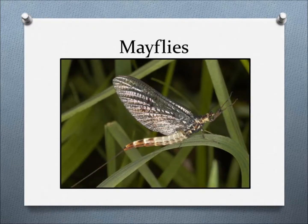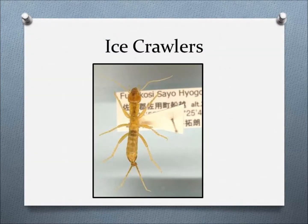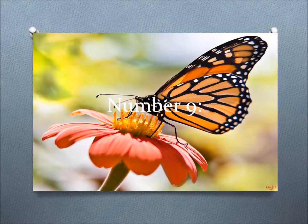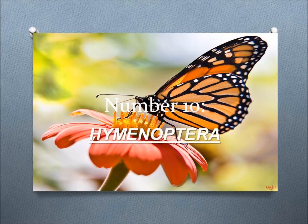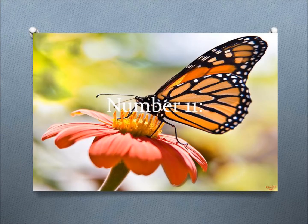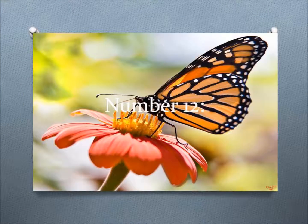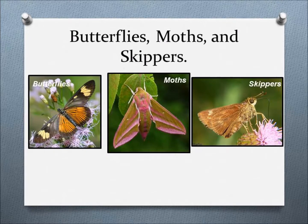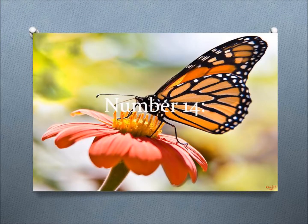Number 7: Ephemeroptera — example: Mayflies. Number 8: Grylloblattidae — example: Ice Crawlers. Number 9: Hemiptera — example: True Bugs. Number 10: Hymenoptera — example: Ants, Bees, Wasps, Bumblebees, and Sawflies. Number 11: Isoptera — example: Termites. Number 12: Lepidoptera — example: Butterflies, Moths, and Skippers. Number 13: Mantodea — example: Mantids.